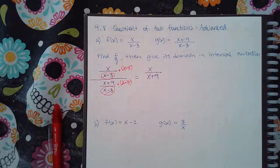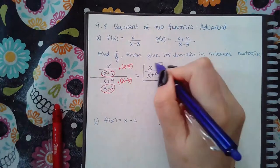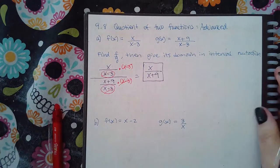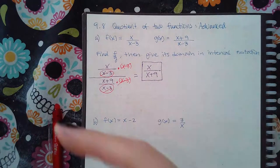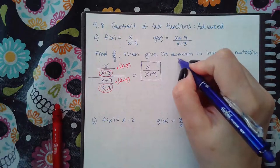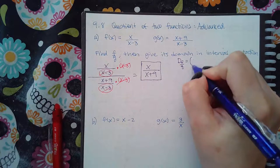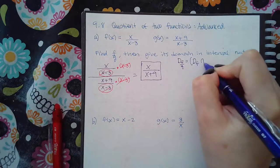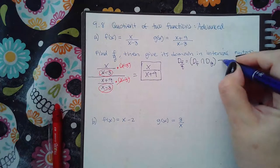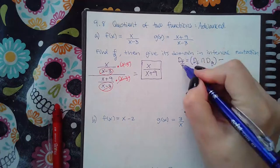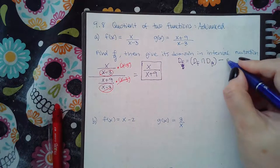That means x/(x+9) is the final expression because I cannot simplify it any further. Now, from the previous section we know that the domain of f over g is the domain of f intersected with the domain of g, and then we remove wherever the denominator g equals zero.